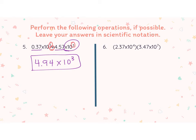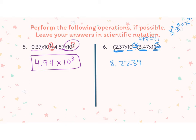In number six, I'm multiplying. So the first thing I'm going to do is multiply my coefficients: 2.37 times 3.47, which gives me 8.2239. Then when multiplying, I add the exponents — just like when we did x to the third times x to the fourth equals x to the seventh back in our exponents unit. The same rule applies here since both bases are 10. So I take 4 plus 7 to get 11, giving me 8.2239 times 10 to the eleventh power.